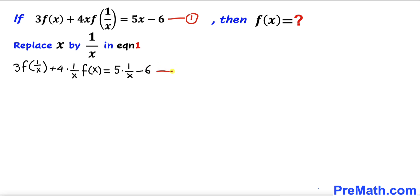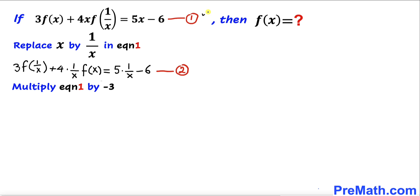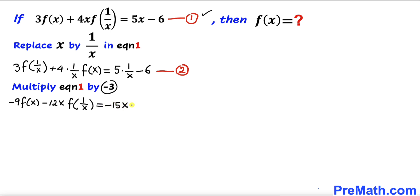Let me call this equation number 2. Our task now is to eliminate f of 1 over x, so we are going to use the elimination method. We will multiply equation 1 by negative 3, giving us negative 9 times f of x, minus 12x times f of 1 over x, equals negative 15x plus 18.